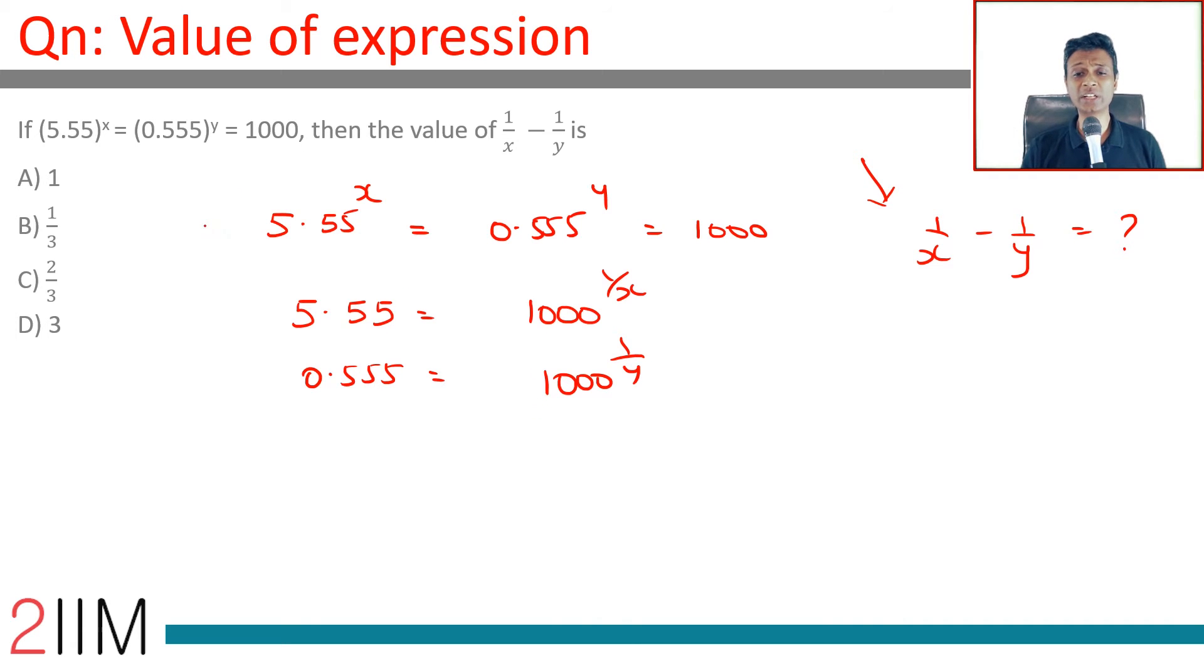The moment you rewrite it like this, you're through. Divide one by the other. This is 10. So 5.55 by 0.555 is 10. This equals 1000 to the power 1 by x minus 1 by y. A power x minus a power y is a power x minus y. The same idea here, brilliant, we are through.